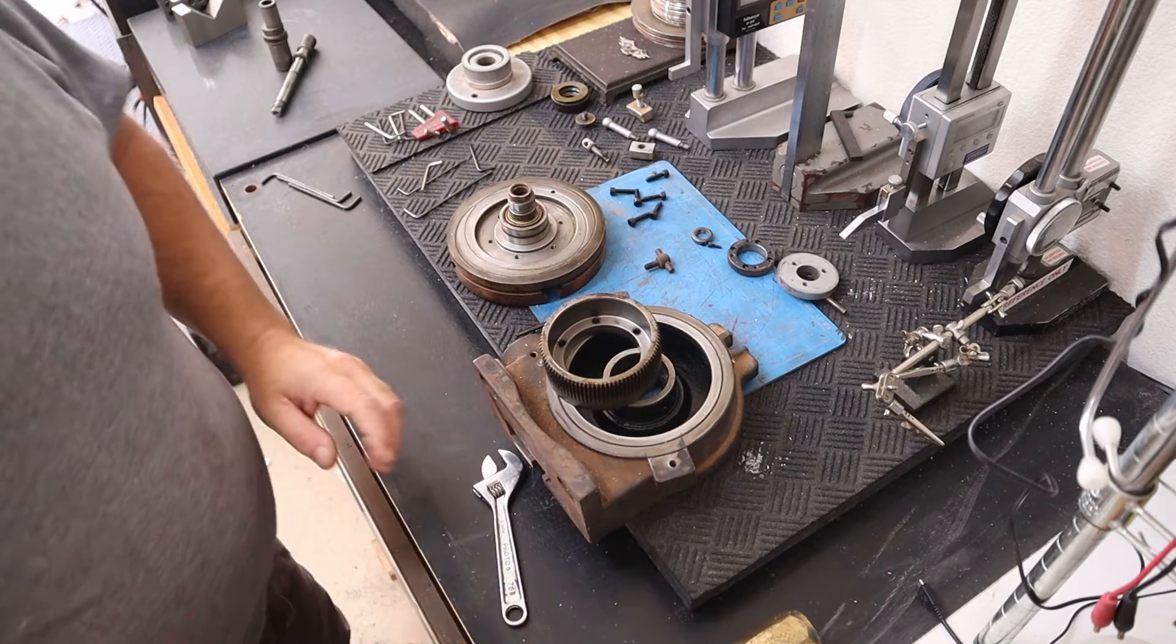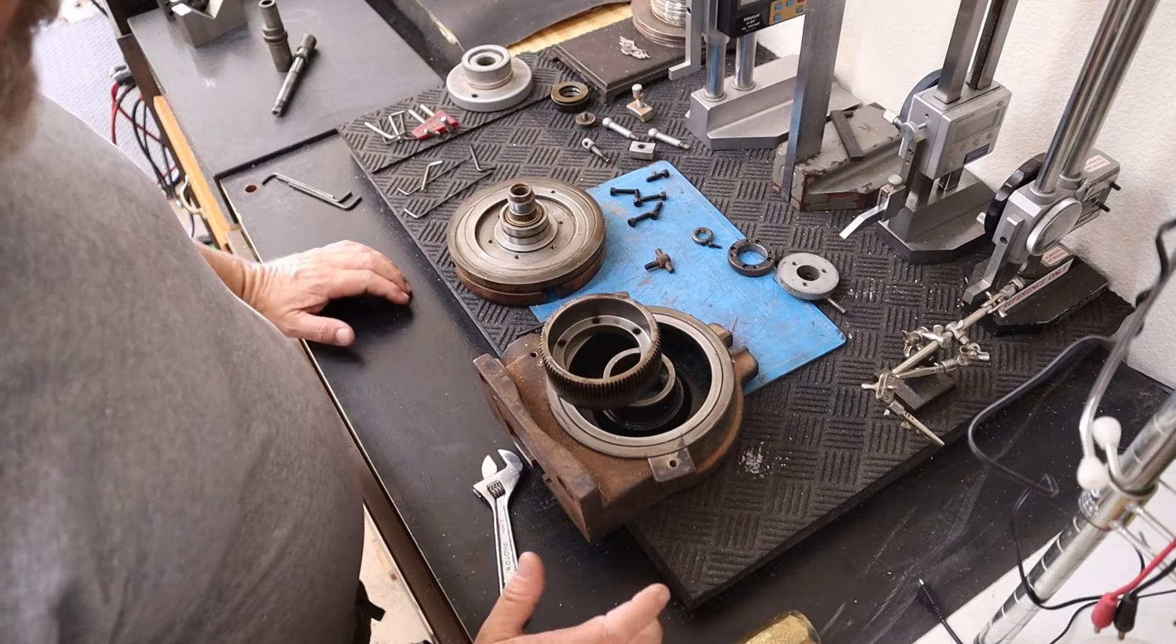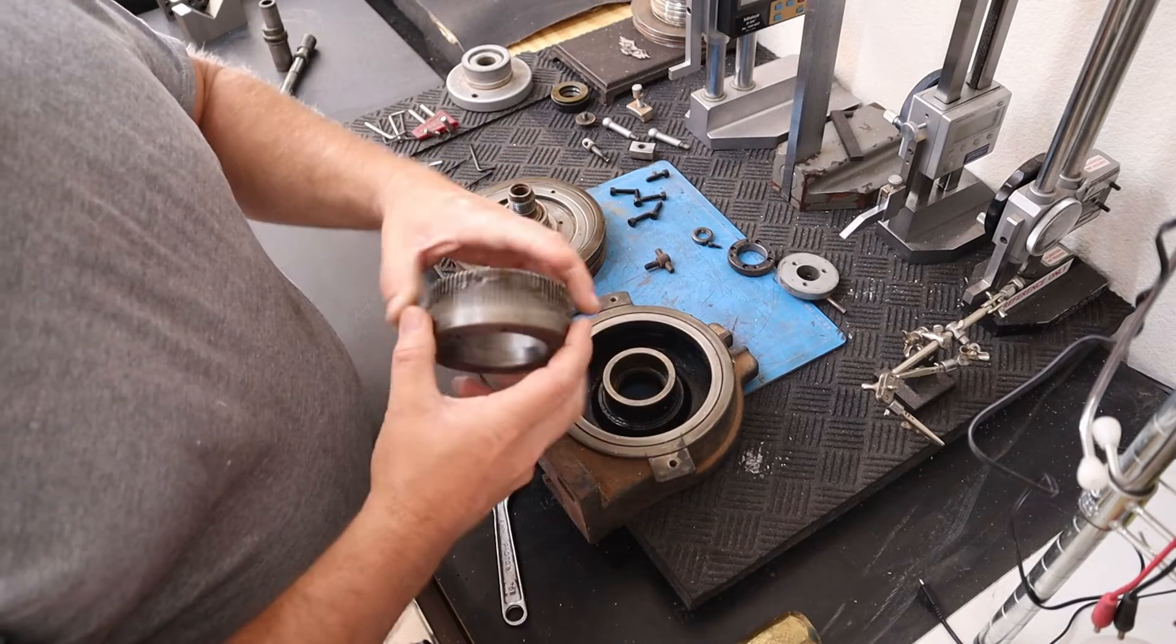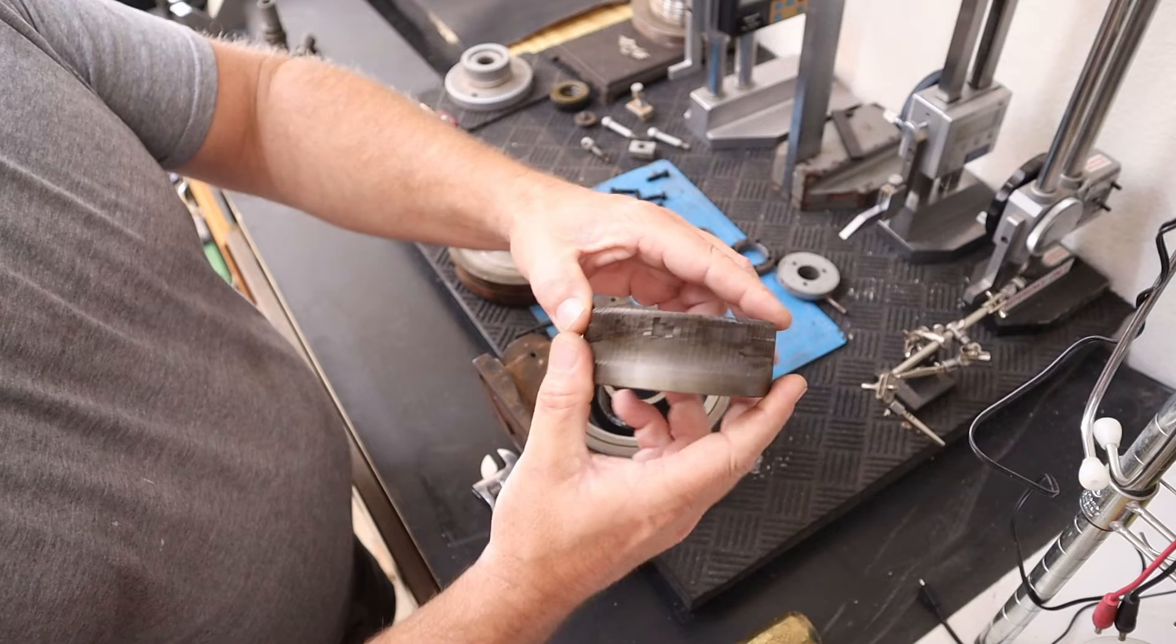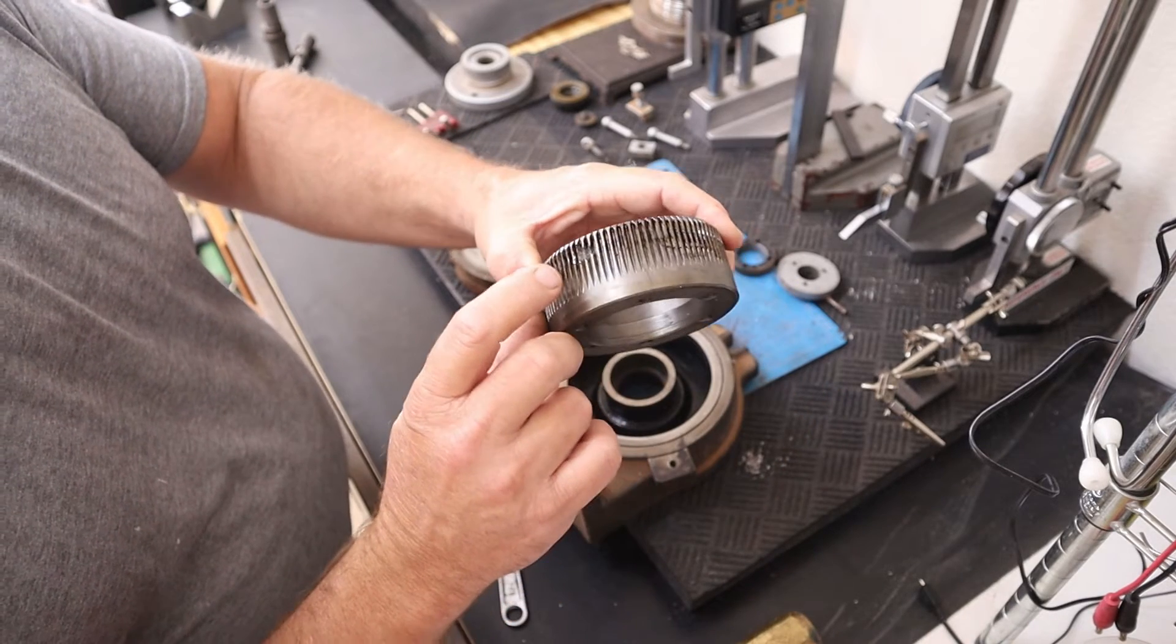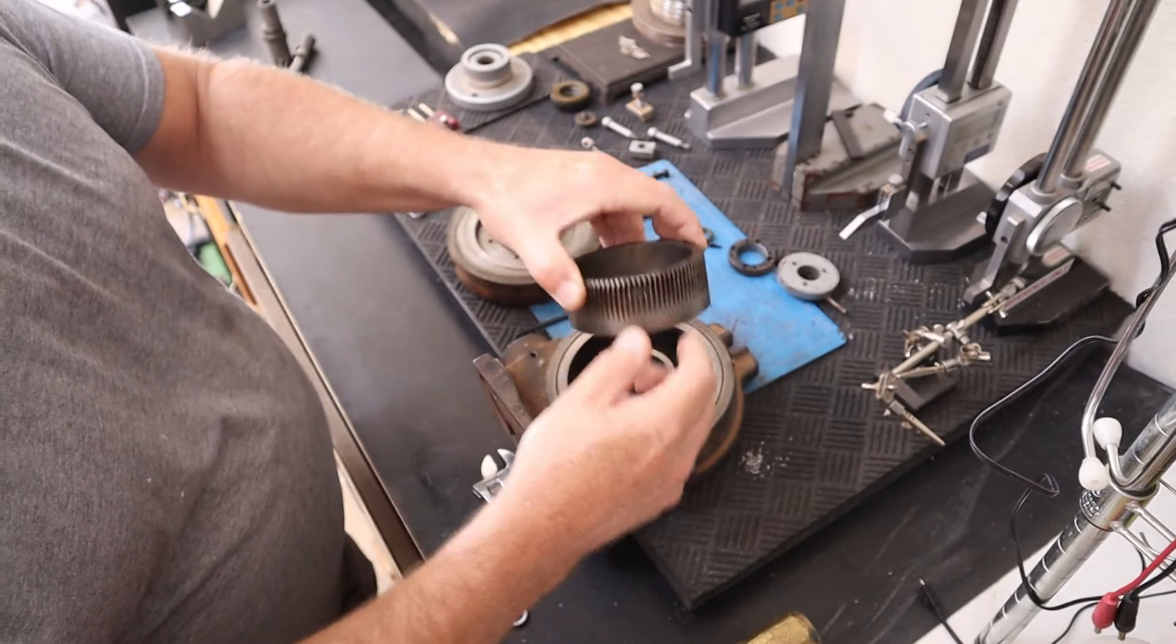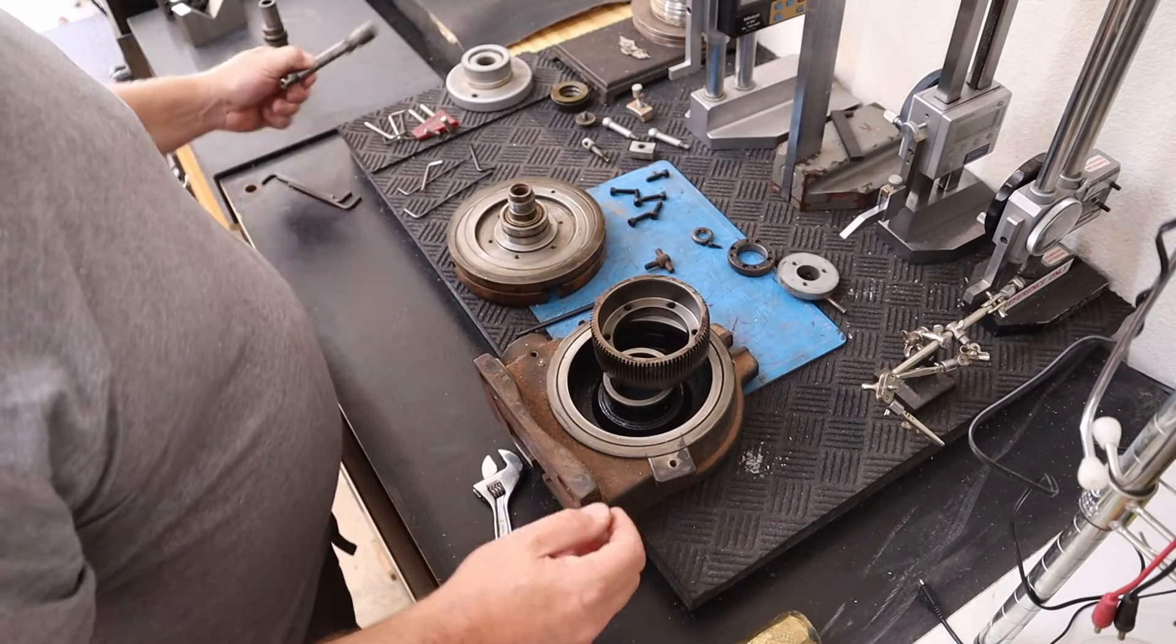So you pick up something and you're really praying that the problem you're having with it isn't major. Well, this one's pretty major. The worm gear has one to two and a half teeth that have completely broken off.